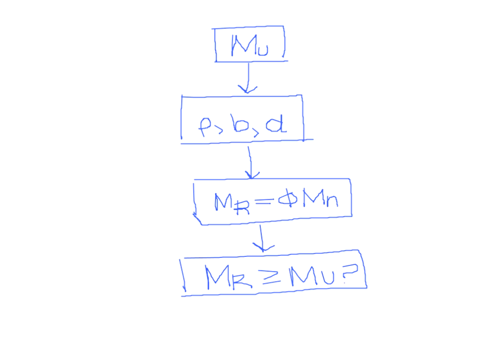We can't do the normal Step 1 because we don't know M sub U, so we'll work backwards. We were given information about the actual slab design, so we can still calculate row, D, check the 12-inch width, and calculate M sub R. From M sub R we can determine the maximum allowable M sub U.